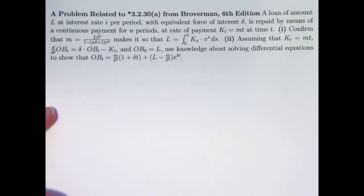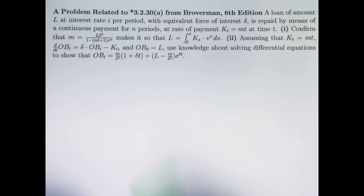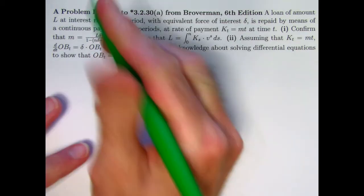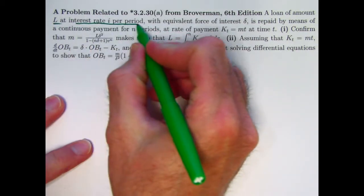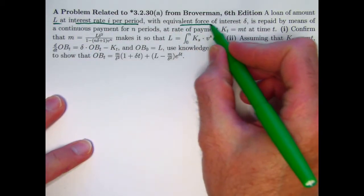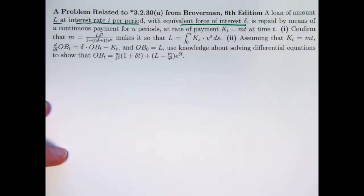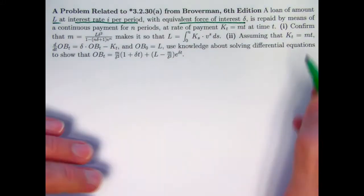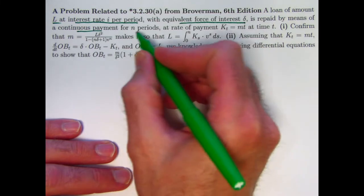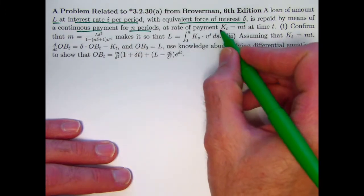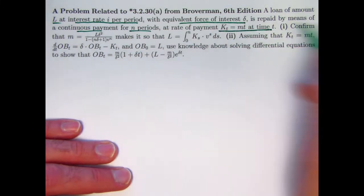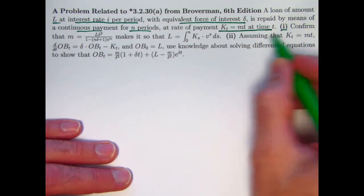Alright, here's the new problem. Once again, we have a loan of amount L, a constant interest rate of I per period with equivalent force of interest delta, which is the natural log of 1 plus I. The payment stream is continuous still for n periods. The rate of payment is now proportional to T.